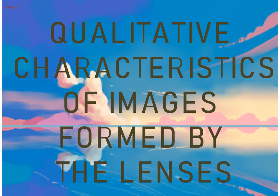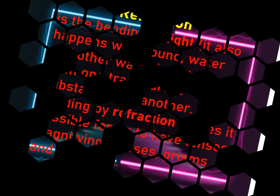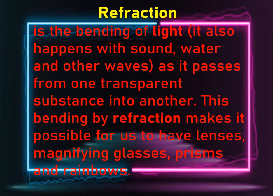Next, in Week 7, we have the qualitative characteristics of images formed by lenses. Now we move from reflection — the bouncing of light — to refraction. You already discussed this when you were in Grade 8, so this is a sort of preview.